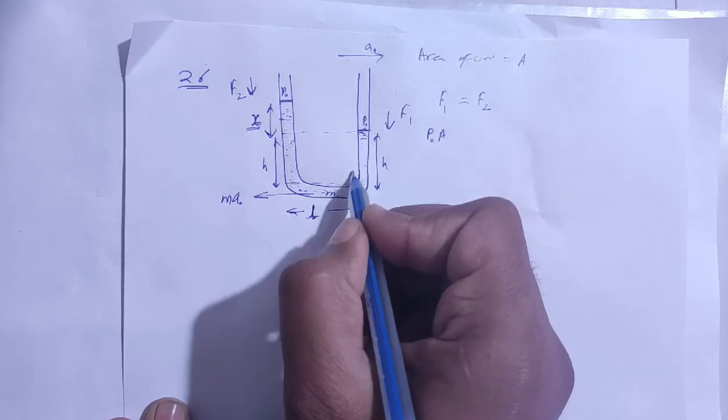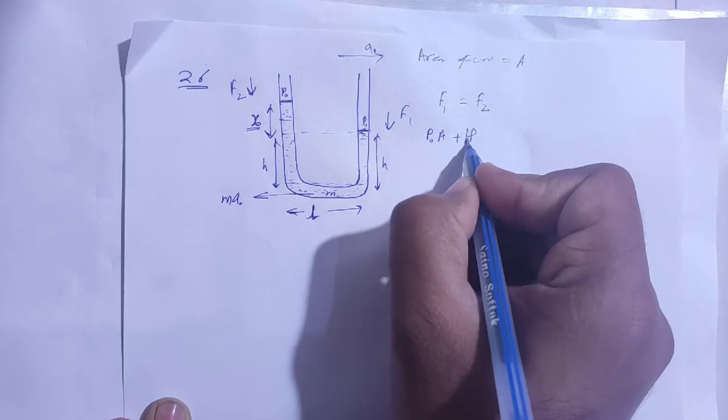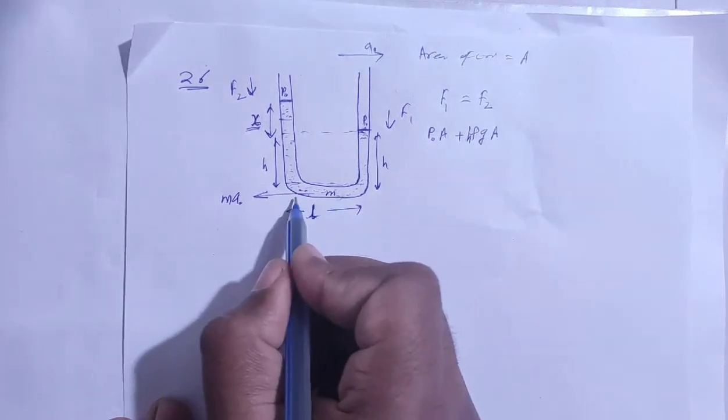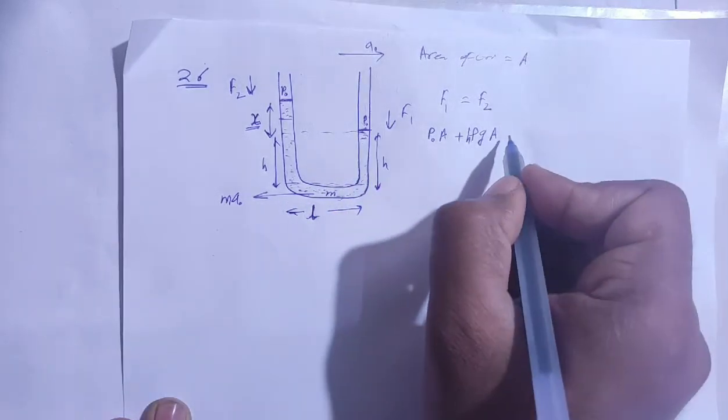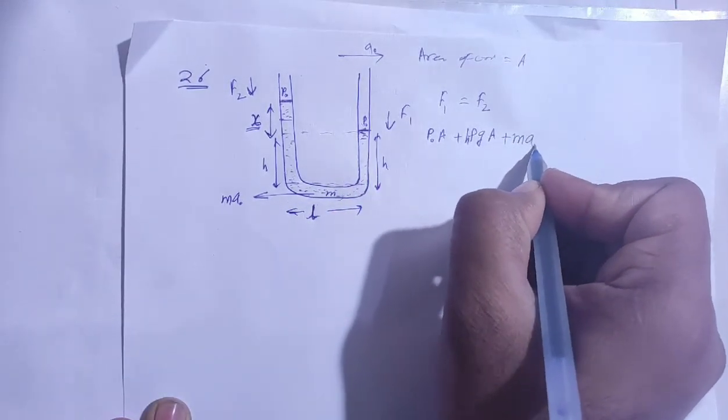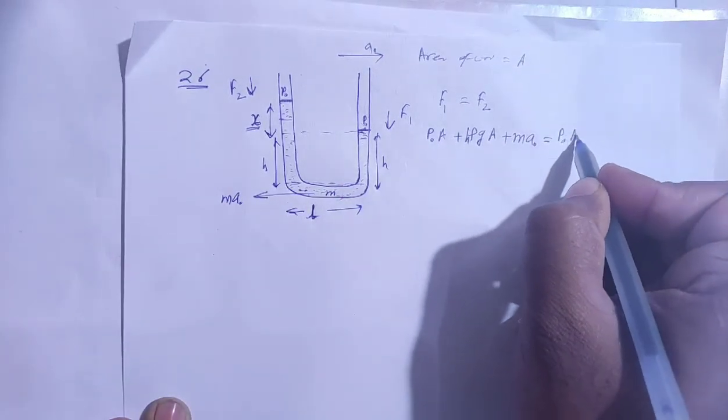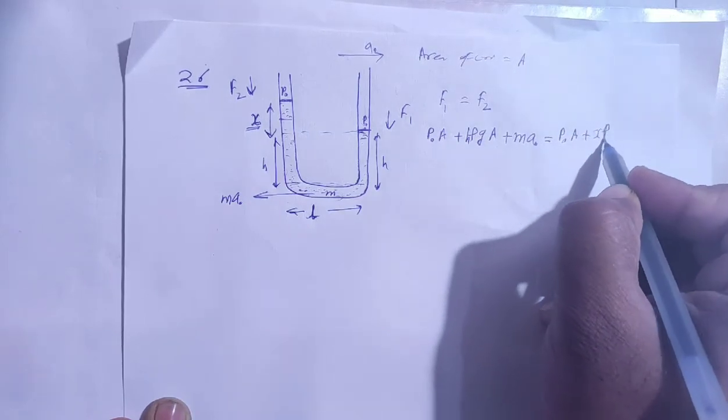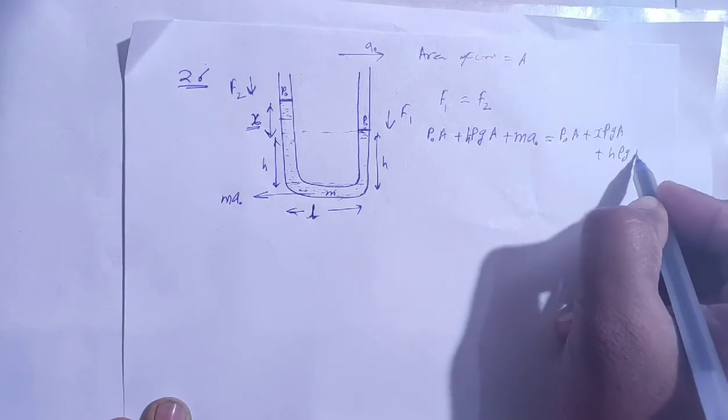And F2, that is atmospheric pressure and x, x rho g A or H rho g A, right, and height x. So this is the equilibrium question, cancel out the terms.